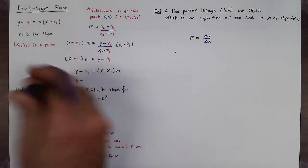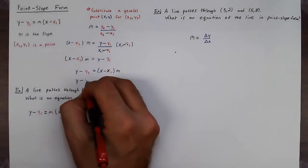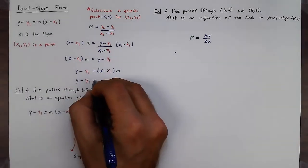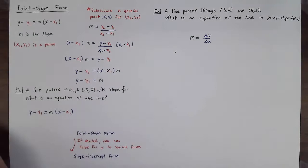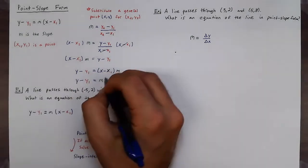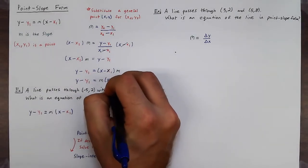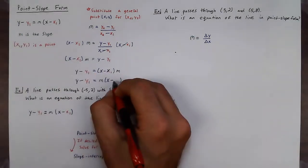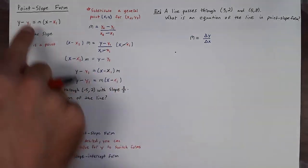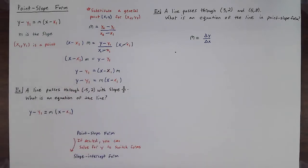We can get y minus y1 is equal to m times x minus x1, which is our point-slope formula. So it's very nice how simple you can derive that formula.